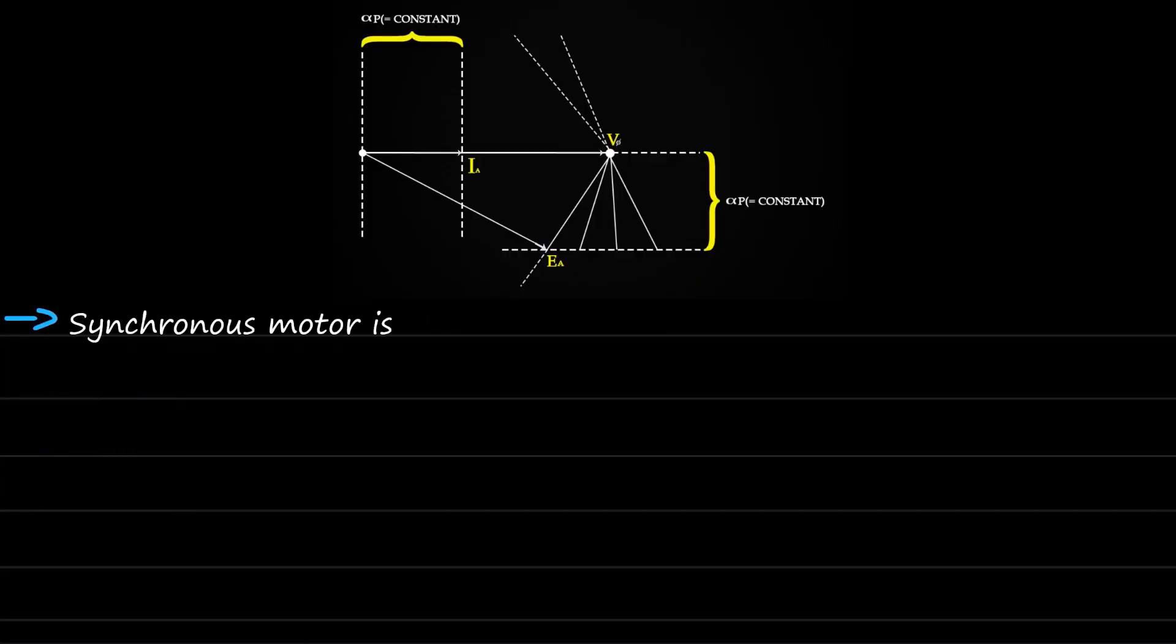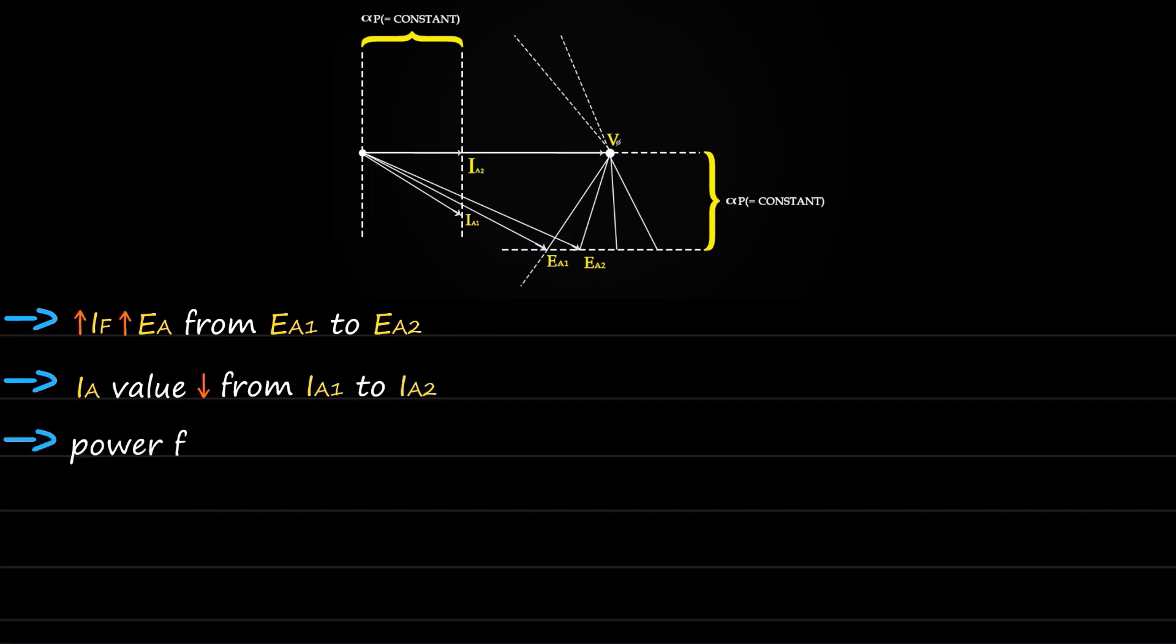Let's assume the synchronous motor is in lagging condition first, having Ea1 and Ia1 as armature voltage and armature current. Increasing IF increases Ea from Ea1 to Ea2. However, Ia value decreases from Ia1 to Ia2, and power factor changes from lagging to unity.